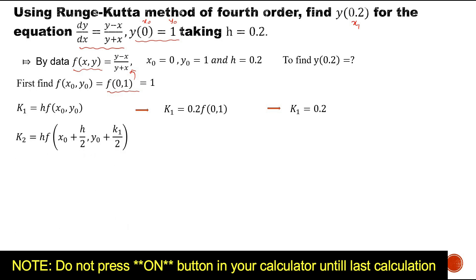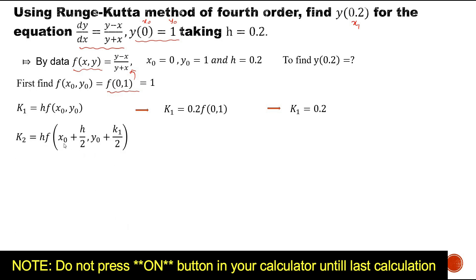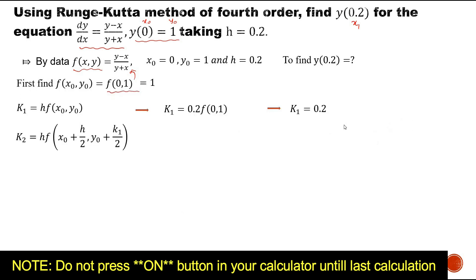Next, I need to find k2. k2 = h·f(x₀ + h/2, y₀ + k1/2). x₀ + h/2 = 0 + 0.1 = 0.1. k1/2 = 0.2/2 = 0.1, so y₀ + k1/2 = 1 + 0.1 = 1.1. Therefore k2 = 0.2 × f(0.1, 1.1). Let us see how to solve this in the calculator.